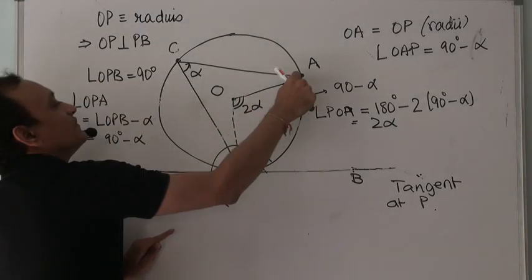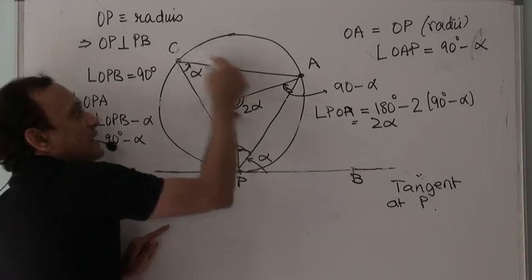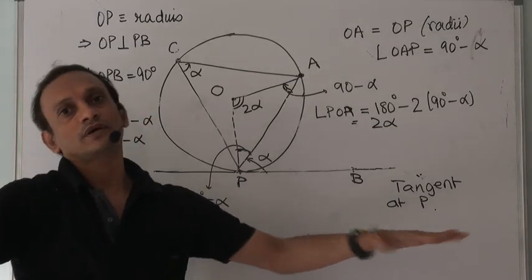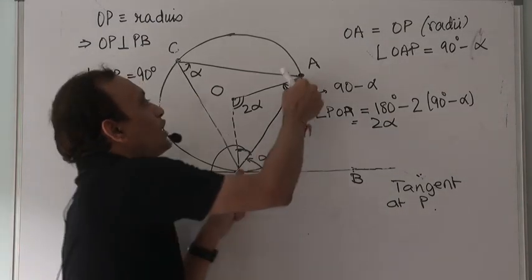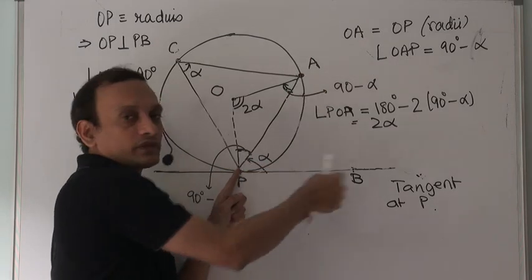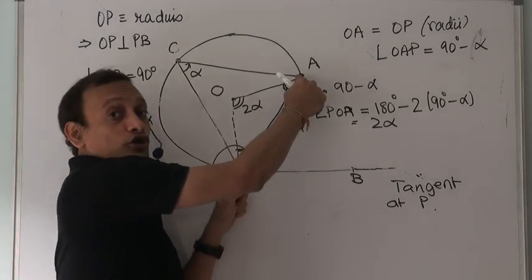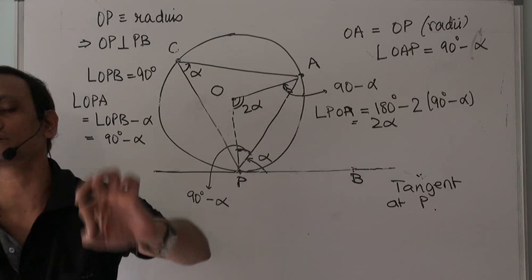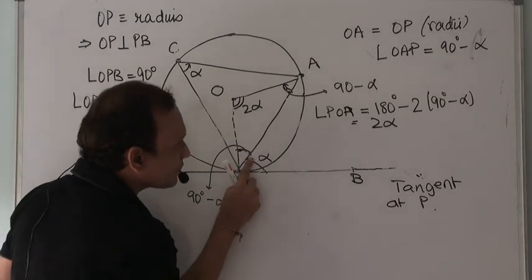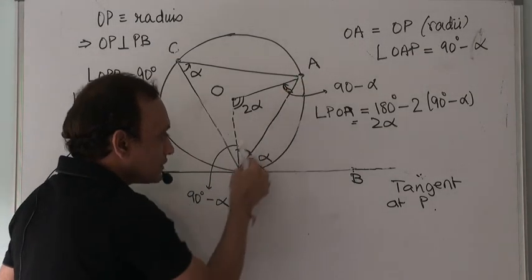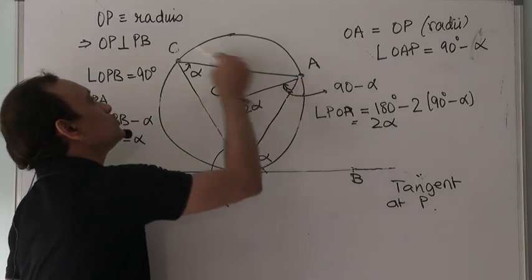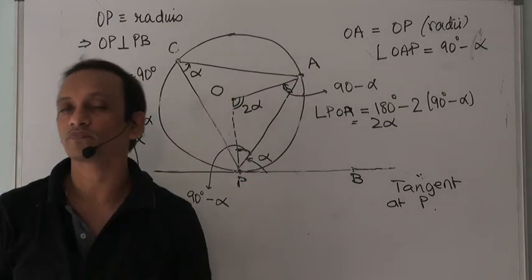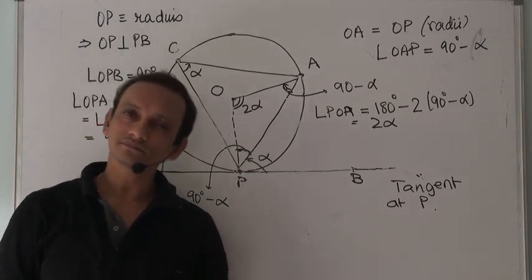This is what we set out to prove: if angle APB is α, then the angle in the alternate segment — angle PCA — must also be α. So if a tangent is drawn to a circle, then on drawing a chord at the point of tangency, the angle the chord makes with the tangent equals the angle in the alternate segment. Both equal α.